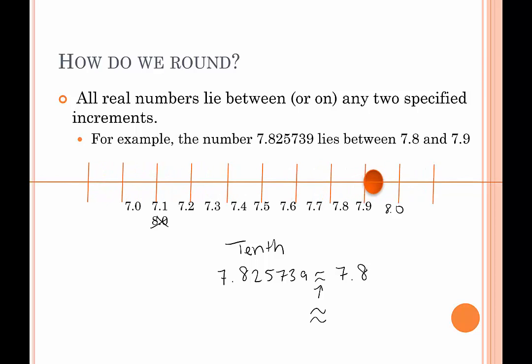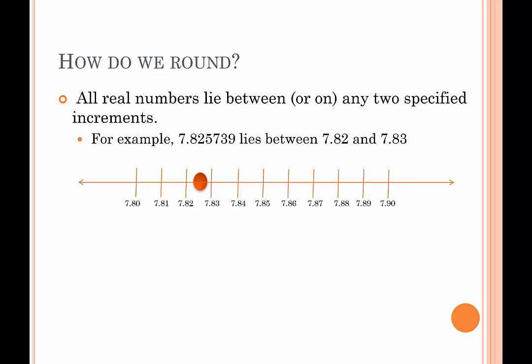What if we want to get more specific than the tenths place? That takes us to the hundredths place. Looking at the hundredths, 7.825739 lies between 7.82 and 7.83. Which one is it closer to? This one's a little bit tougher to see because it's almost exactly in the middle. Here's the hundredths place — it's the two. We look to the next place, the five, and maybe even the five and the seven combined, because that's going to help us. That's going to be ever so slightly closer to 7.83. So 7.825739, rounded to the nearest hundredth, would be 7.83 — it's a little bit closer to 7.83 than 7.82.